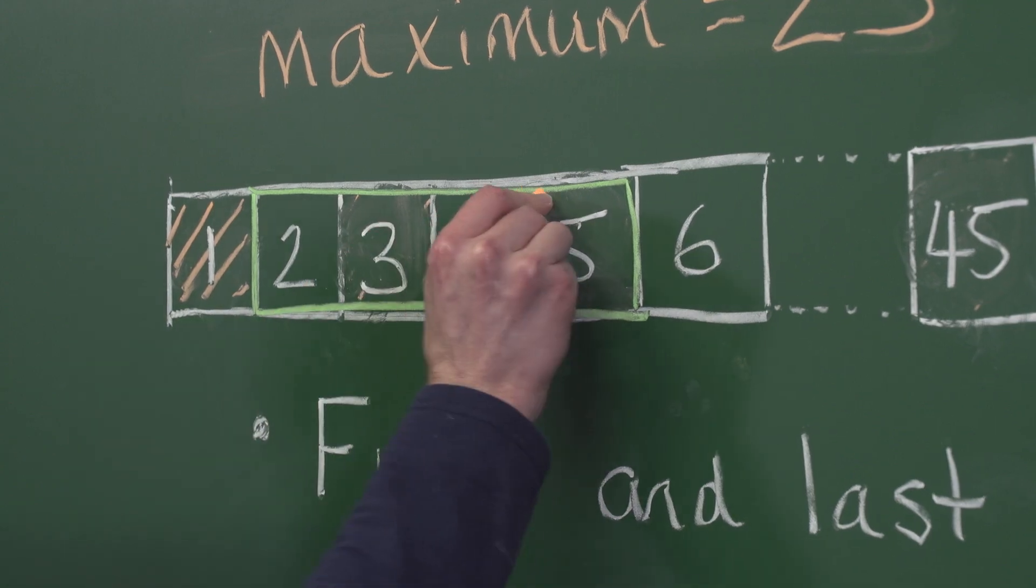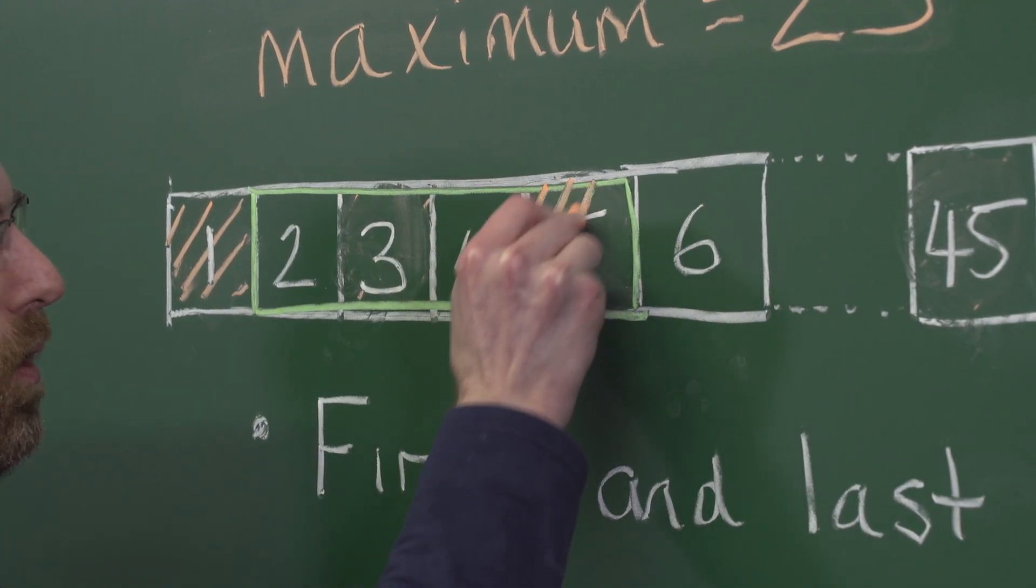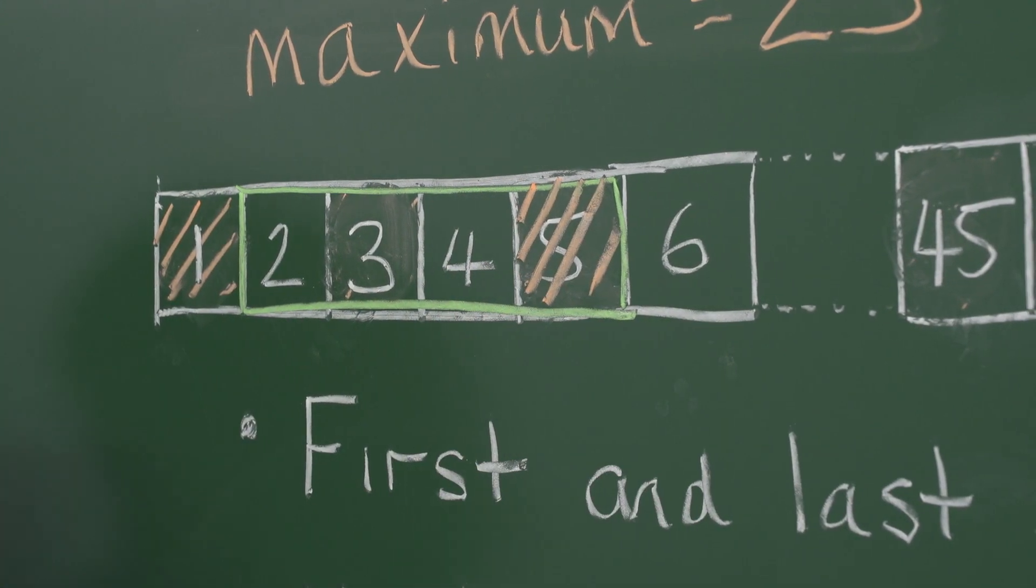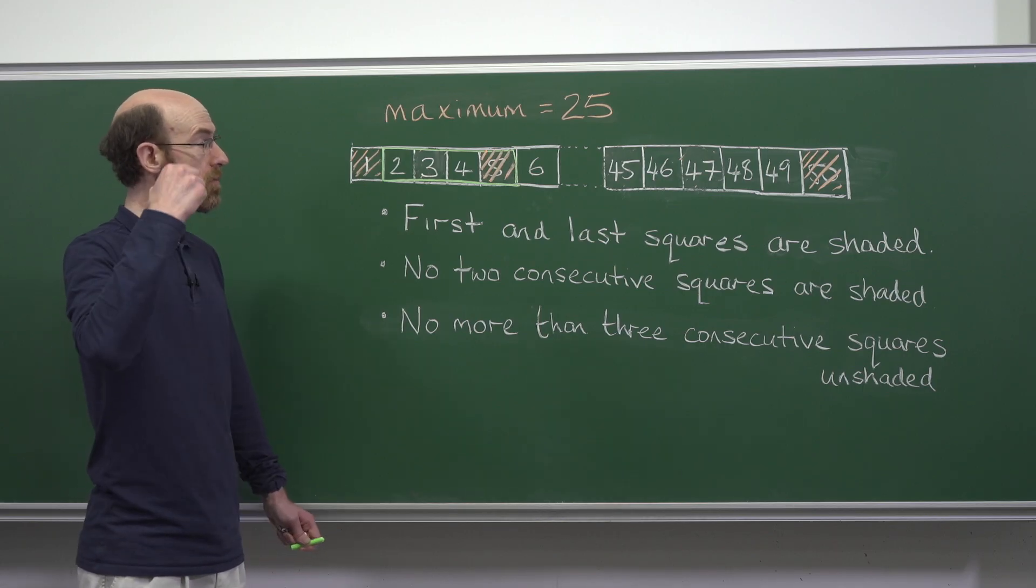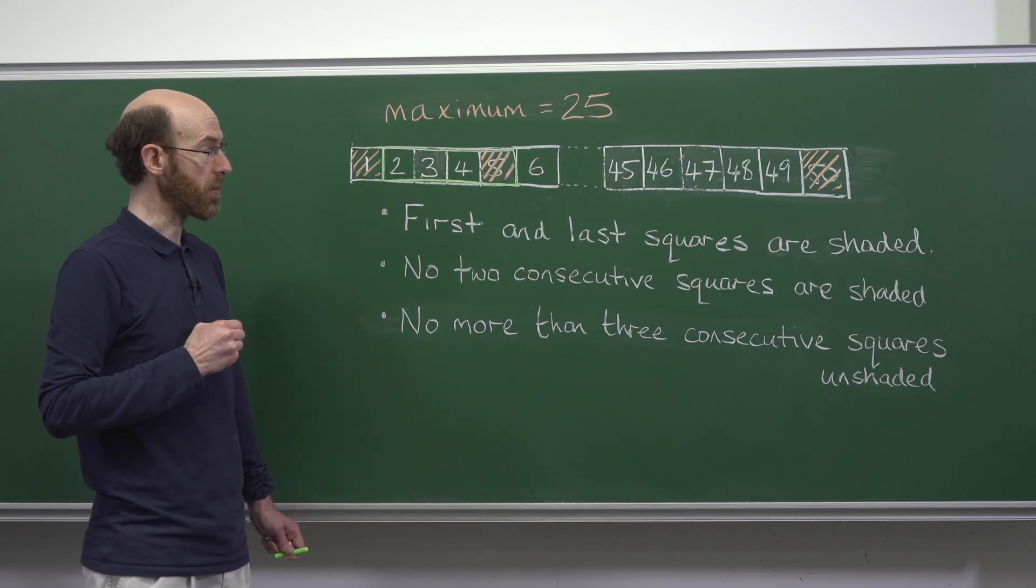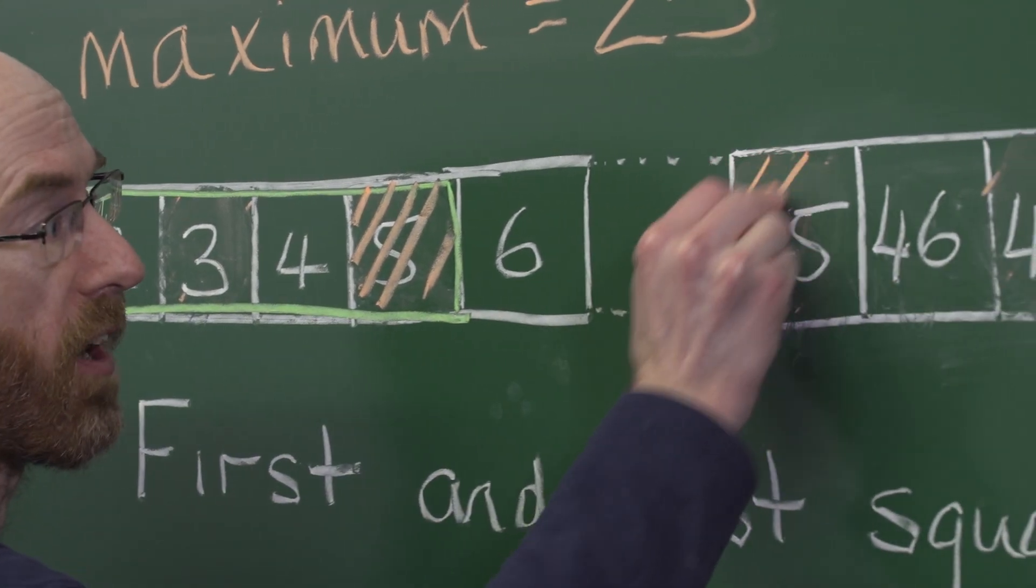We can shade 1, 5, 9 all the way up to, well we have to be a little bit careful with the final one. We can shade 45, but we can't extend that sequence to 49 because that is adjacent to 50 which breaks our second rule.